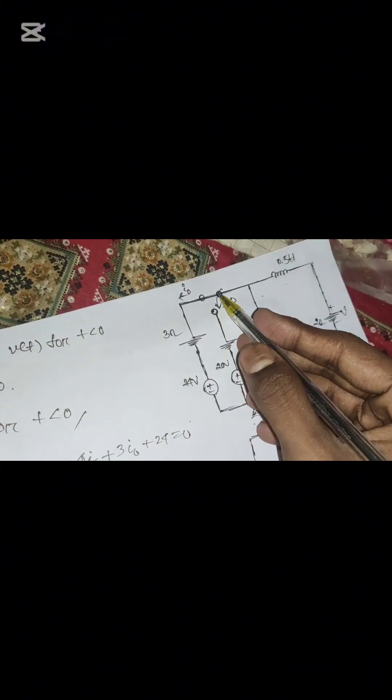Now for t greater than zero: when the switch changes, the circuit now looks like this. We have the inductor, a 2-ohm resistance, a 0.5-henry inductor, and a 20-volt source. This is the new circuit configuration for t greater than zero.